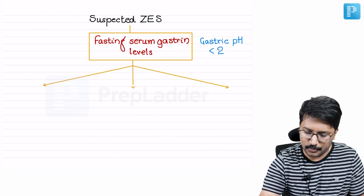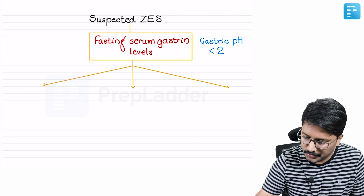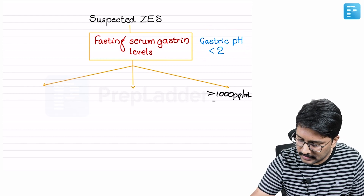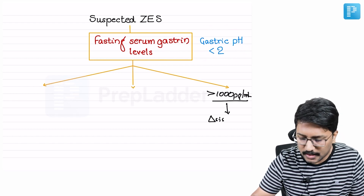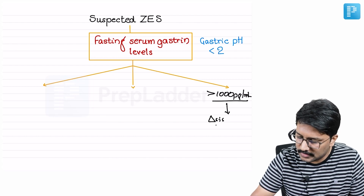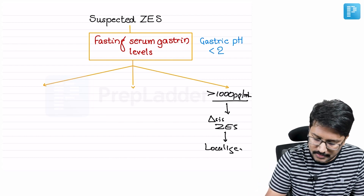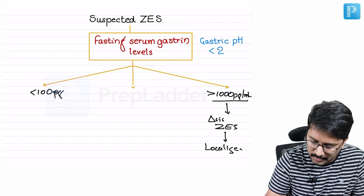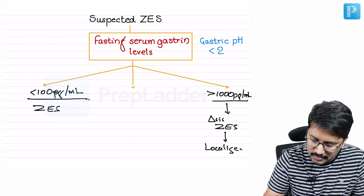When you do fasting serum gastrin levels coupled with gastric pH less than 2, if the gastrin is more than 1000 picograms per ml, your diagnosis of Zollinger-Ellison syndrome is established and you do not need further evaluation. The next step would be to localize the tumor. On the other hand, when gastrin is less than 100 picograms per ml, Zollinger-Ellison syndrome is unlikely.